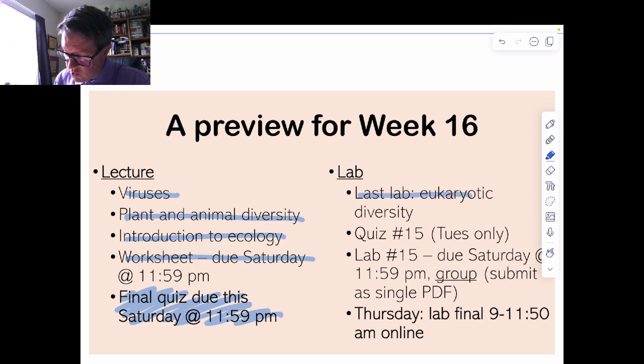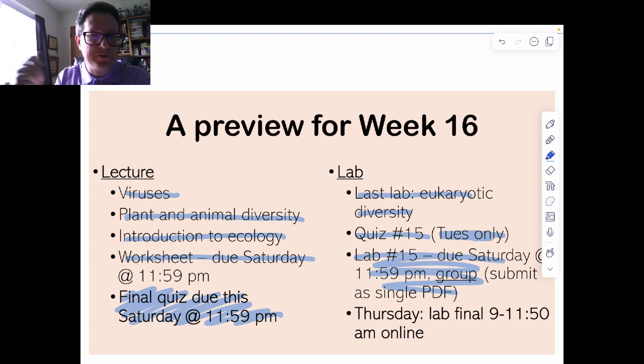The lab is only going to be for the Tuesday class, and that's going to be eukaryotic diversity. We'll have the last quiz, so the Thursday class already had an additional quiz, they were up one quiz compared to Tuesday, so it all evens out. This last lab will be due on Saturday. It is a group lab because the one that the Thursday class did that the Tuesday class didn't was also a group lab.